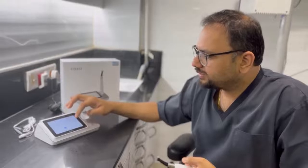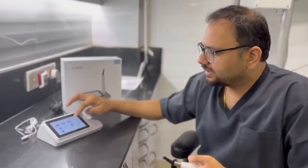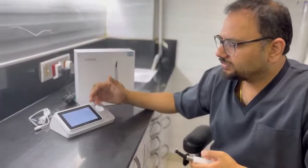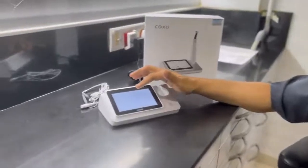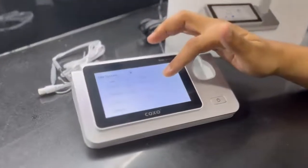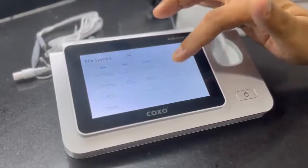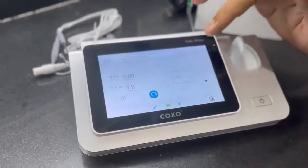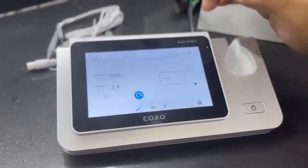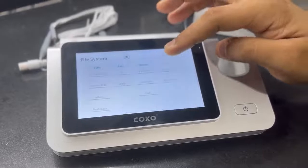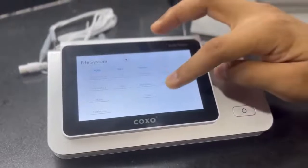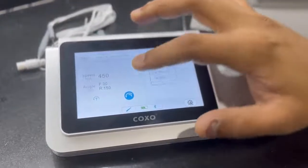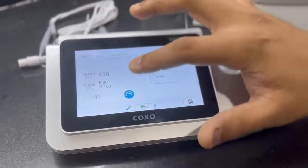The other unique feature of this is that you can also customize your settings. So if you don't find your particular file system over here, you can customize the settings as per rotary or reciprocation files. For rotary files, you can go to a maximum speed of 1000, and for reciprocation files, you can adjust the individual angles as well as the speed.